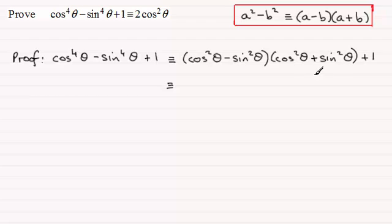So what we're left with then is cos squared theta minus sine squared theta. Okay that's going to be times one so it's just going to be that and then we've got plus one here.